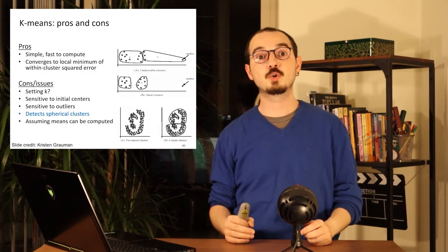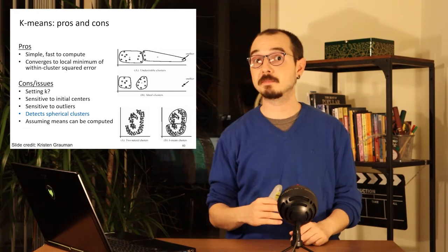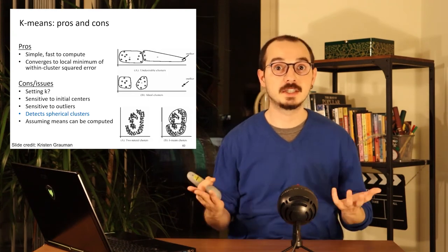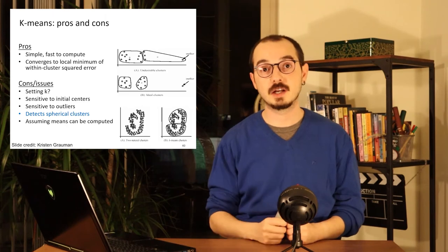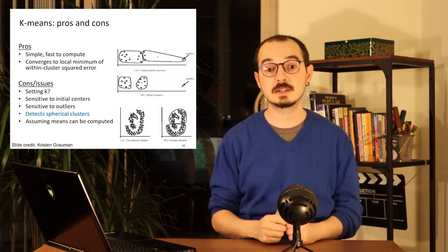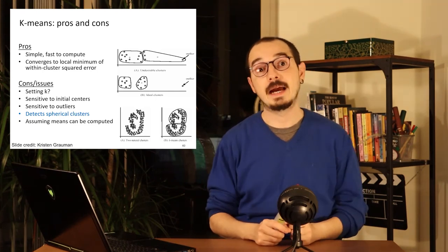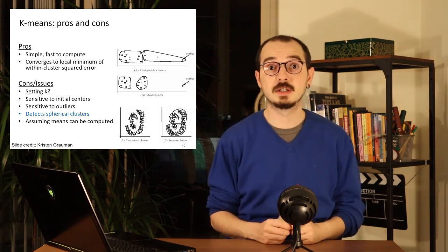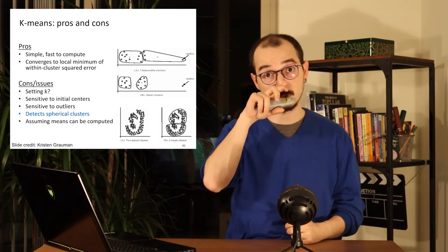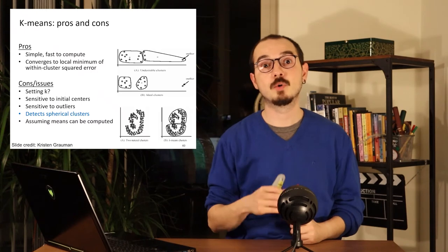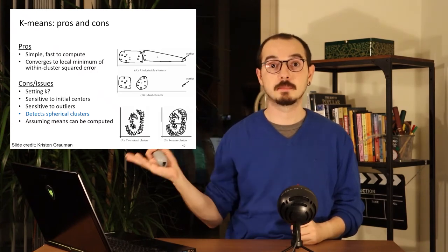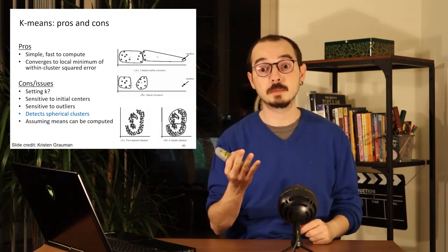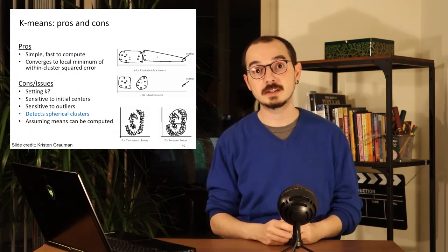K-means is simple and quite fast to compute. It sometimes converges to a suboptimal result called a local minimum. We don't know how to find the right k. If we initialize the algorithm differently, it might give different results. Outliers will confuse k-means quite a bit. And it can only compute spherical or elliptic clusters, because we define clusters as Gaussian distributions. When we have a more complex distribution, k-means will give a nonsensical answer, even though as humans we can clearly see the division between clusters.